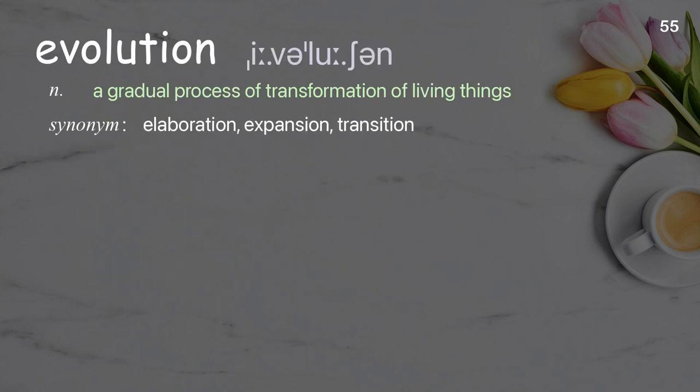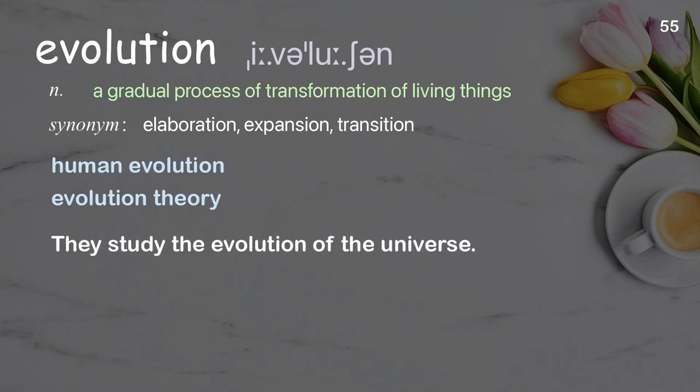Evolution: a gradual process of transformation of living things. Examples: human evolution, evolution theory. They study the evolution of the universe.